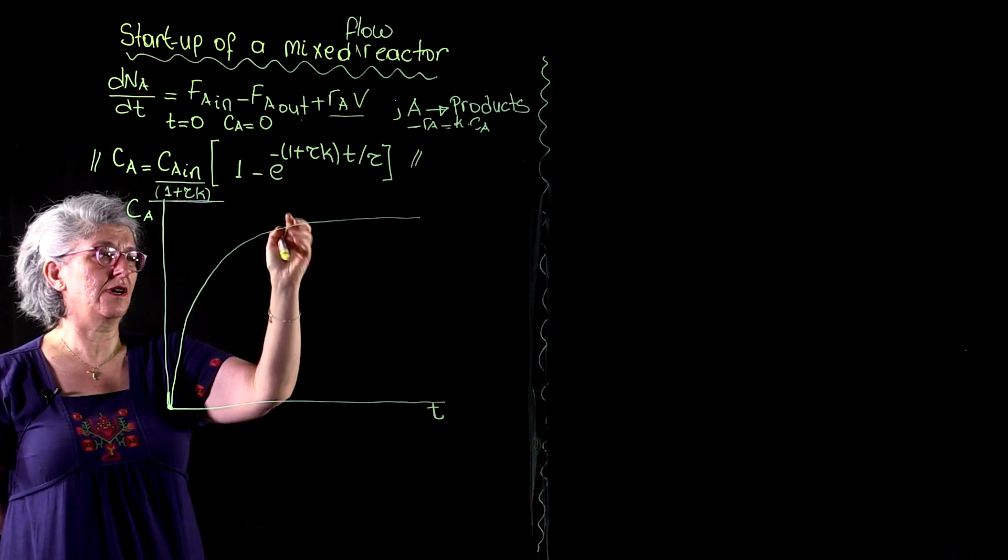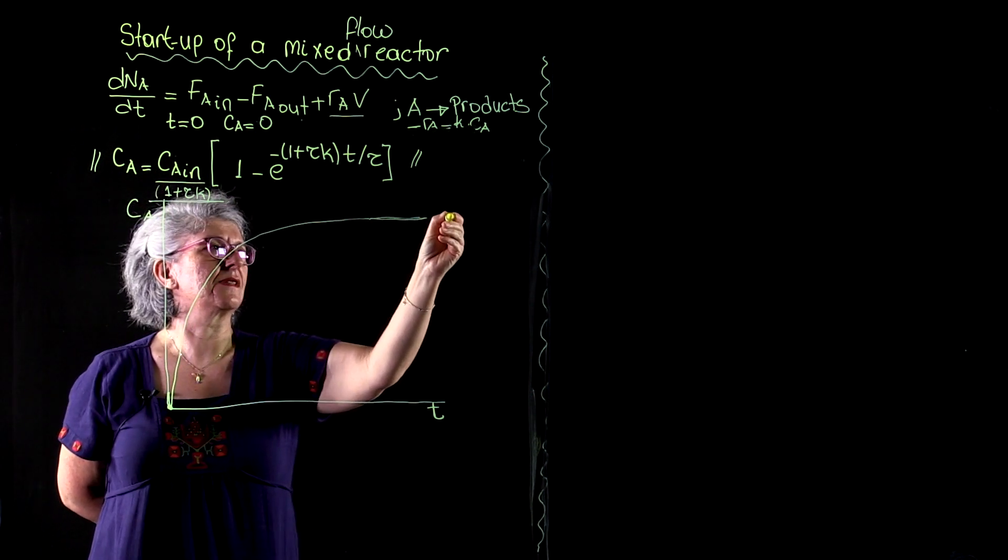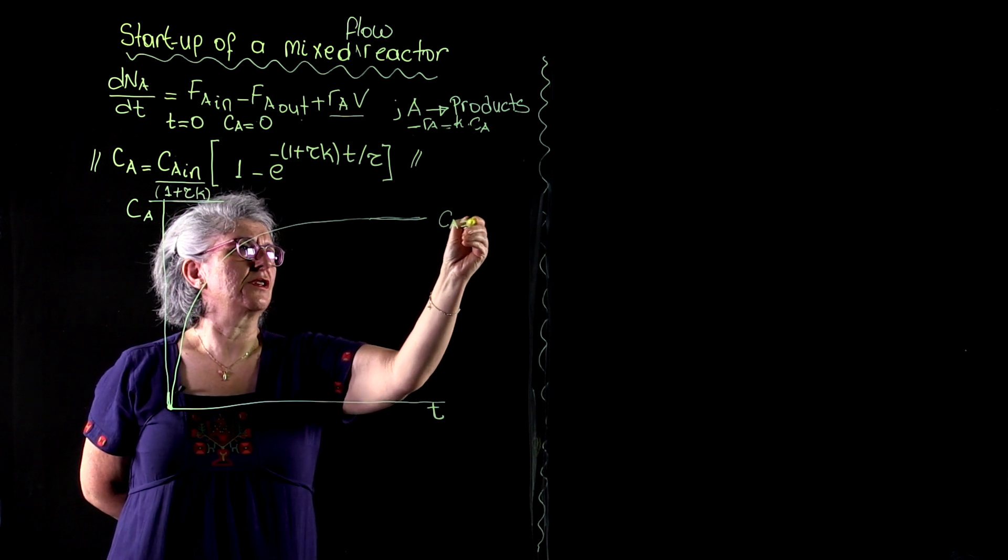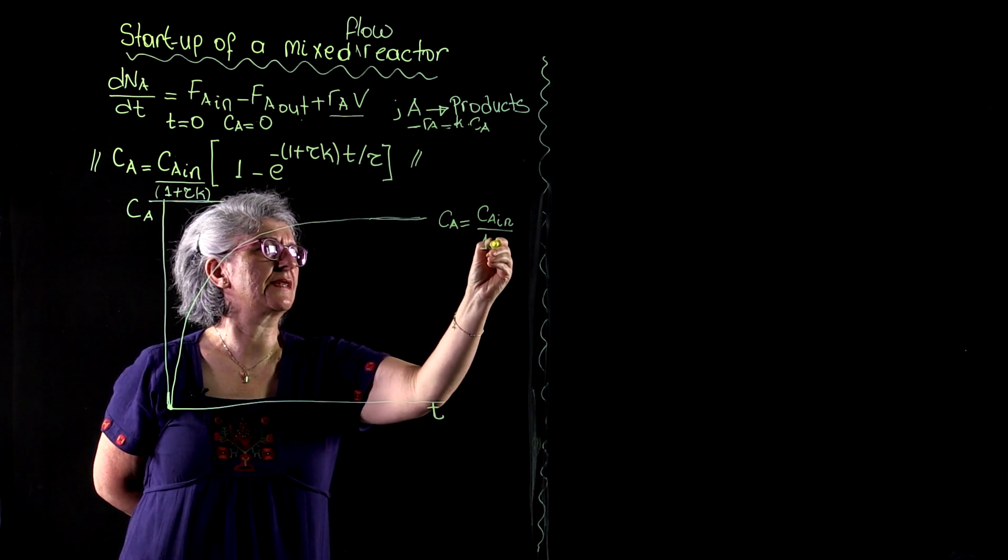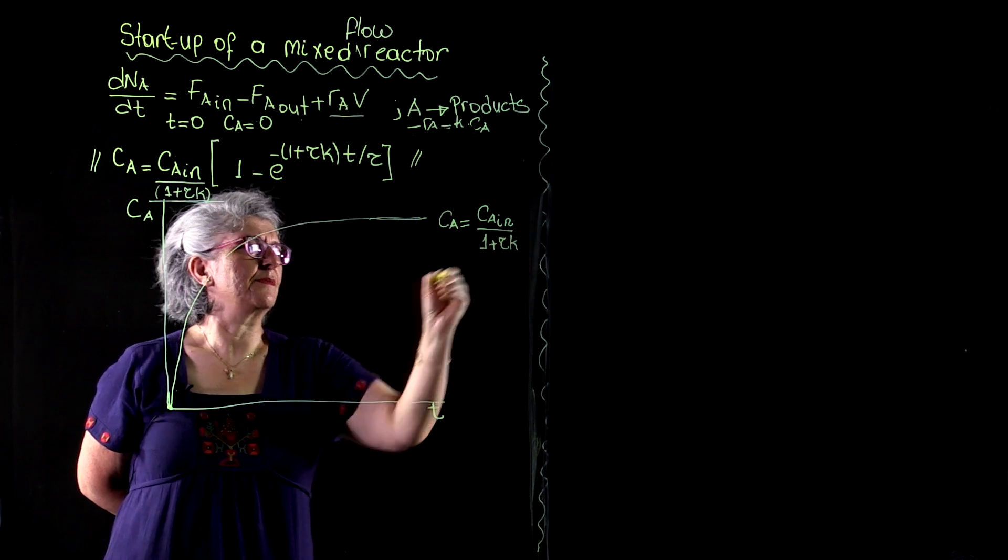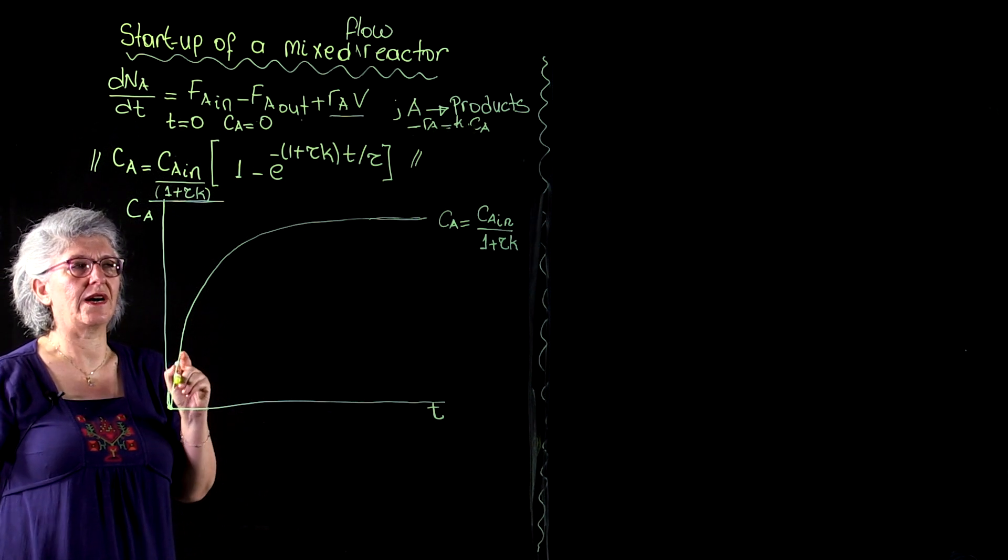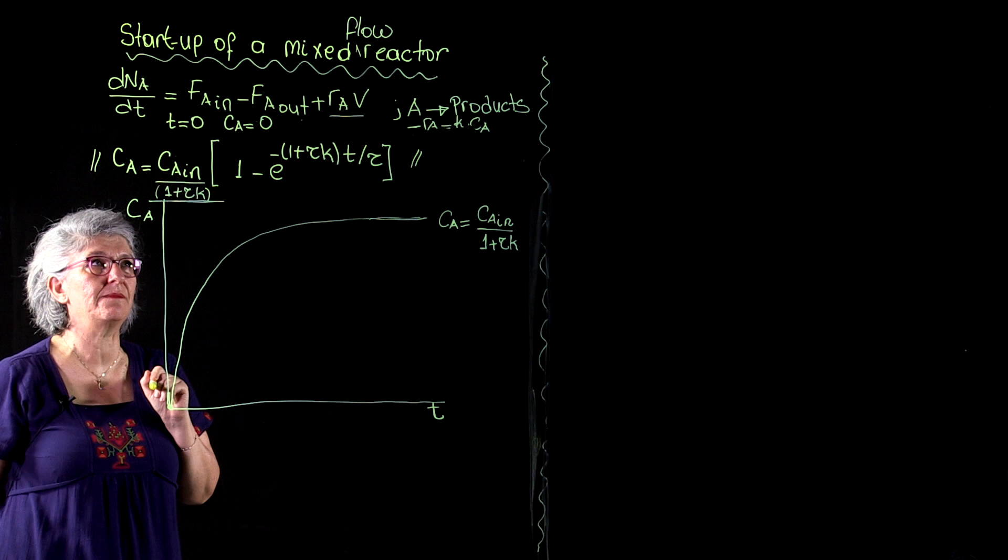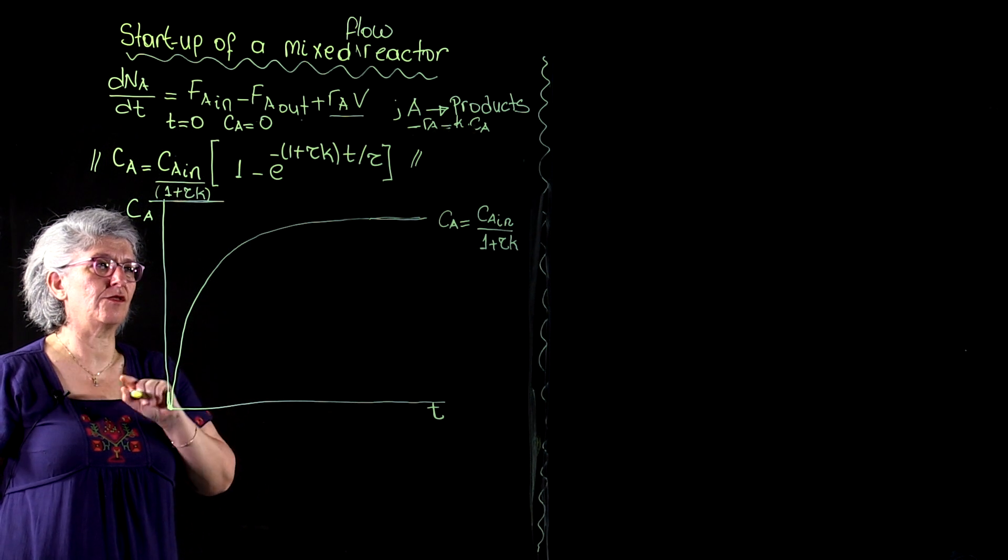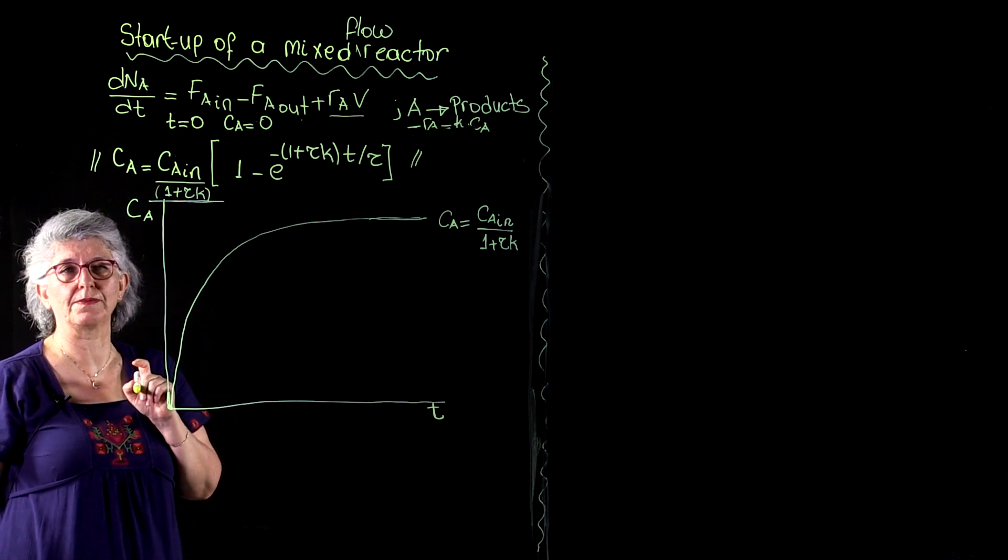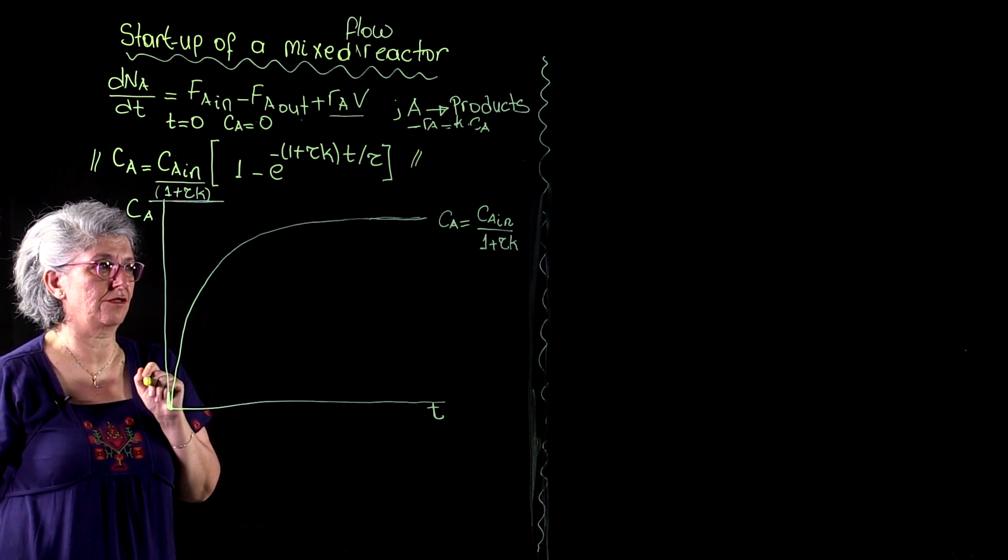And for the asymptotical solution, our concentration approaches to the inlet concentration divided by 1 plus Tau K. Remember that that was the steady state solution for our first order reaction taking place in a mixed flow reactor. So, as time goes to infinity, concentration of A should go to the steady state solution. This is how you're going to check if you're making a mistake or not in your derivations.